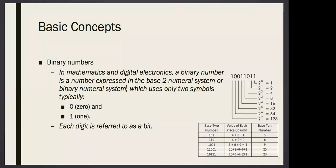In base two, we refer to each digit as a bit. If it is a three-digit number like 101, it is three bits. If you want to represent this number you will need three bits — three cells. These bits are flip-flops in the digital circuit, so you need three flip-flops to represent a three-digit binary number.